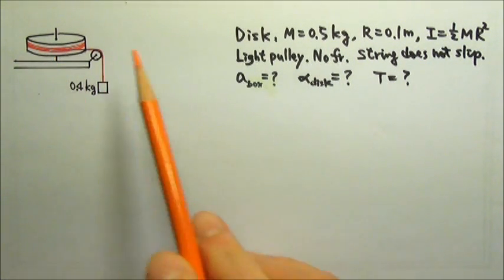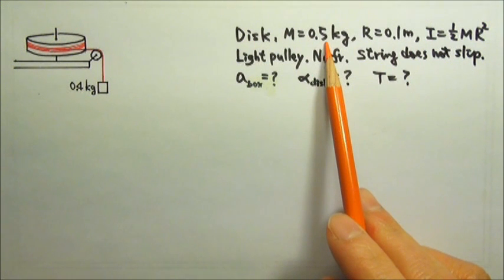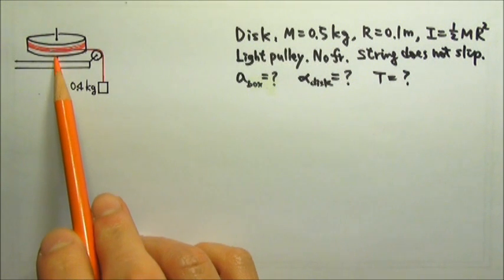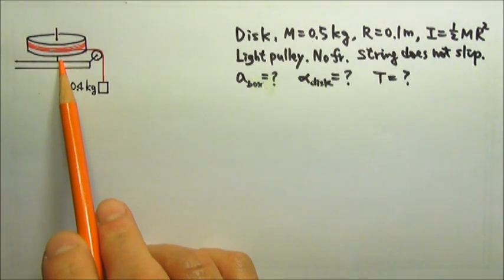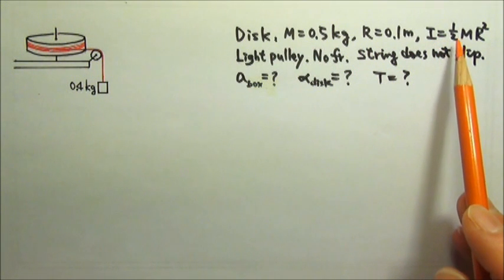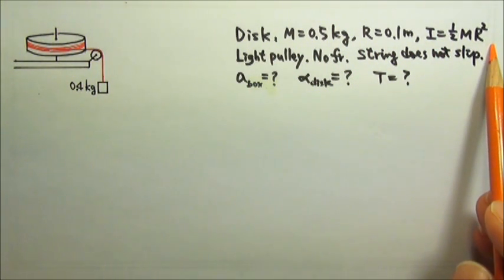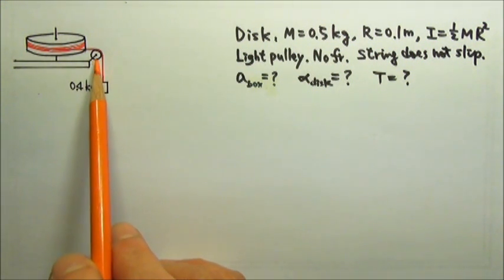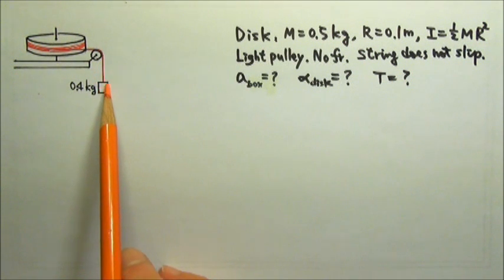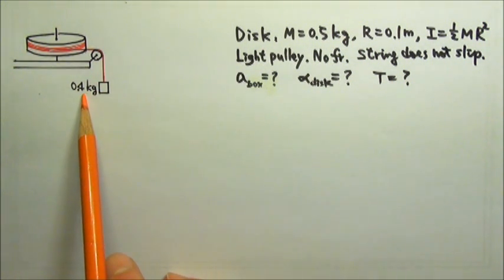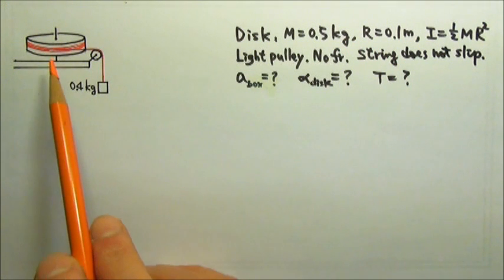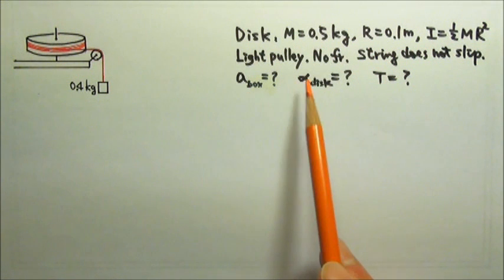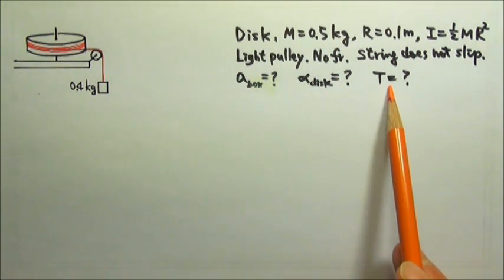This solid, uniform disc has a mass of 0.5 kg and a radius of 0.1 m. It can rotate about a frictionless axis that goes through the center of the disc. Its rotational inertia can be found using the equation: one-half mR squared. A string wraps around the disc, then goes over a light frictionless pulley and is attached to a hanging 0.4 kg box. The string does not slip on the disc or on the pulley. Find the acceleration of the box, the angular acceleration of the disc, and the tension in the string.